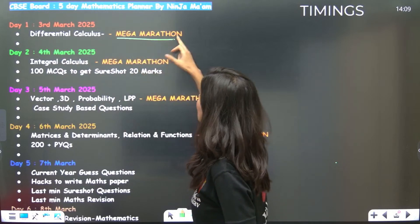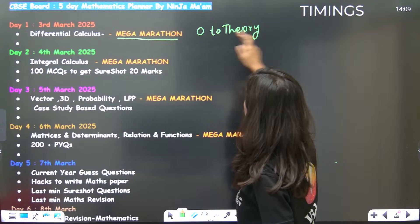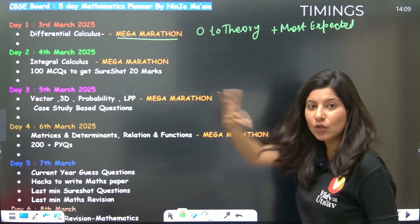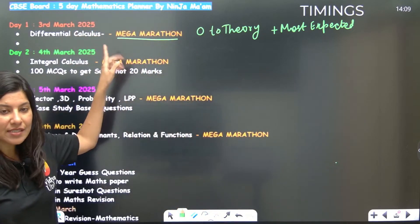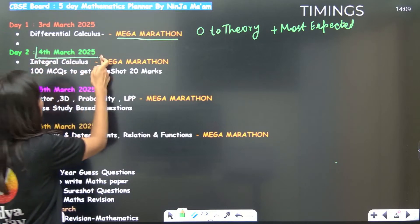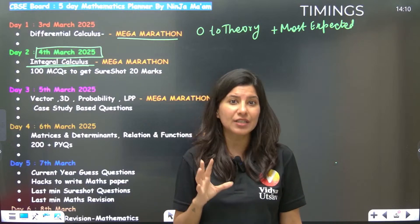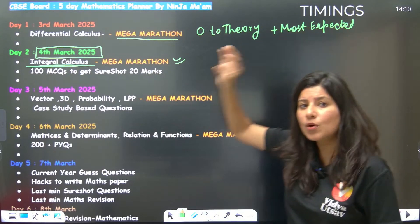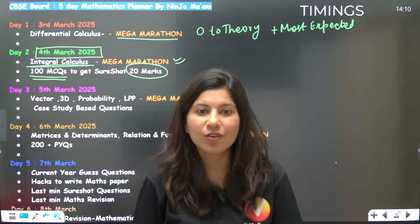On 3rd March, Day 1, we are going to do a Differential Calculus mega marathon — zero to hero theory, starting from zero, plus all the most expected questions. This will include PYQs and most expected questions from NCERT and NCERT Exemplar. On Day 2, 4th March, we are doing Integral Calculus — indefinite integration, definite integration, differential equations, and area — all four chapters. Same format: zero to hero theory, most expected PYQs, plus a 100 MCQ session to secure 20 marks in Section A.